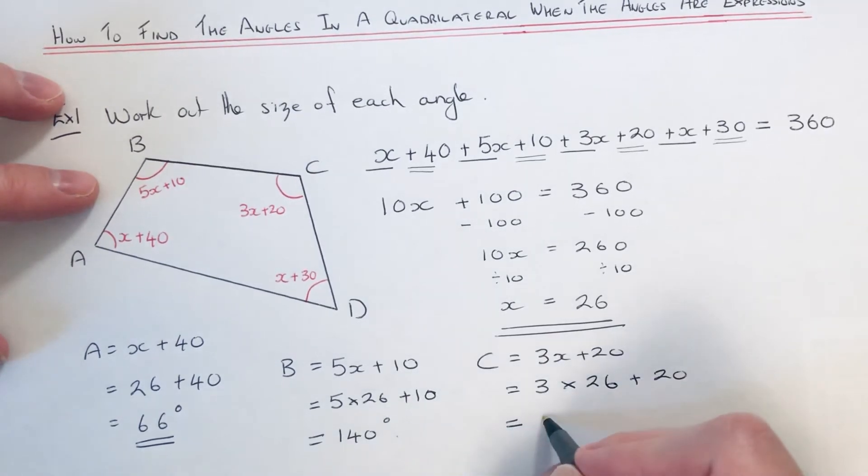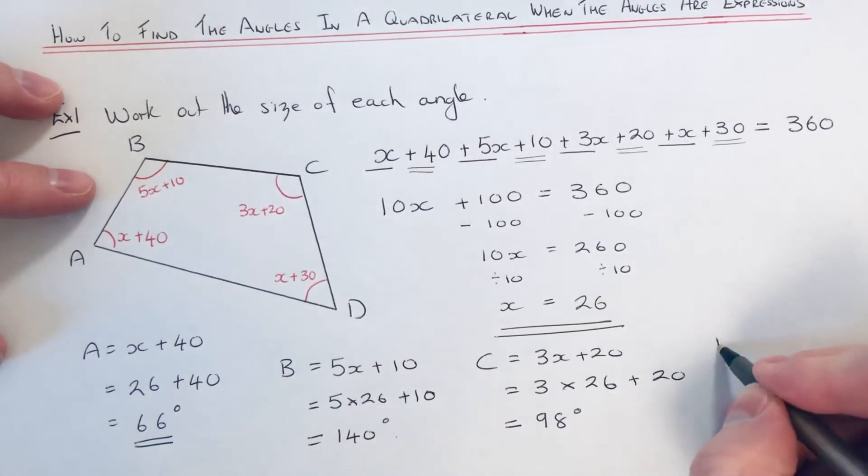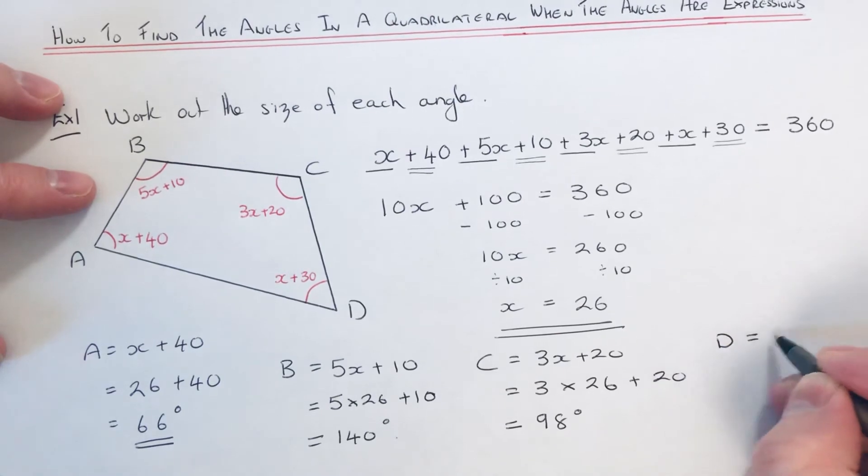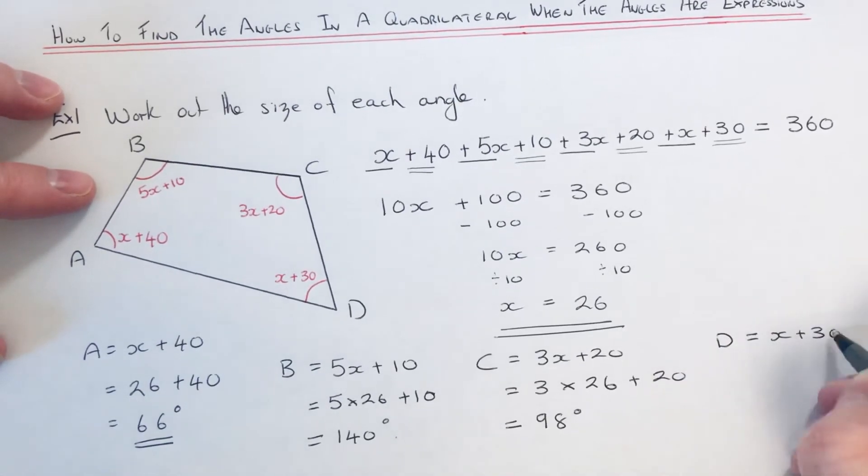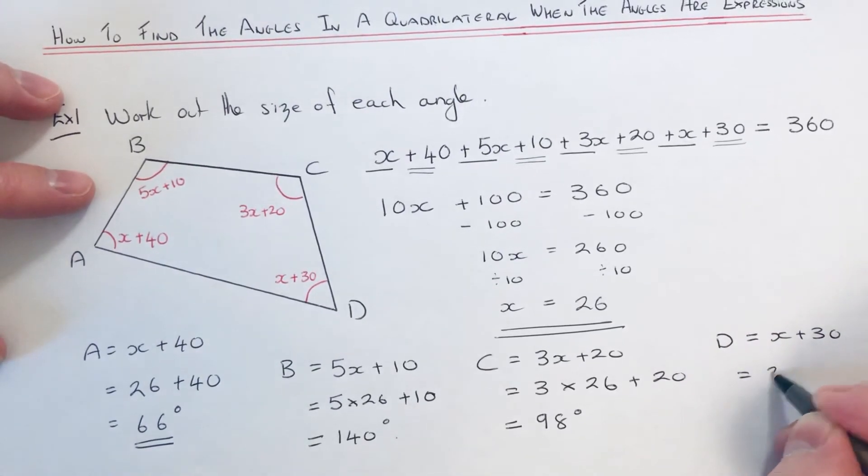And finally angle D. So that's x plus 30, so 26 add 30 is 56.